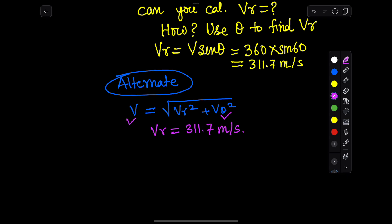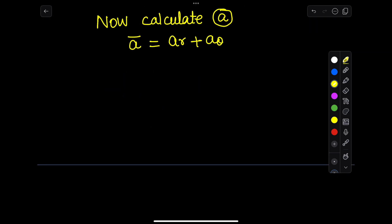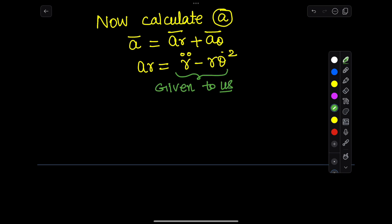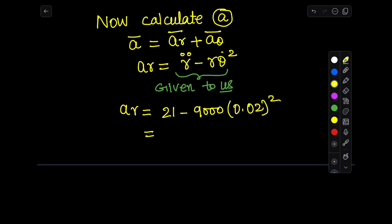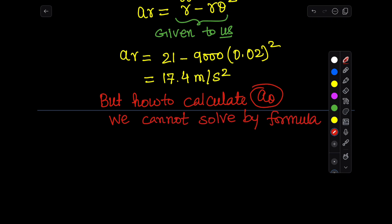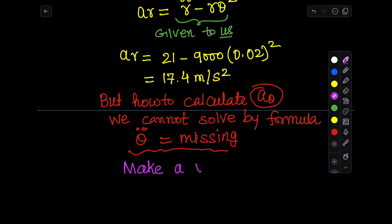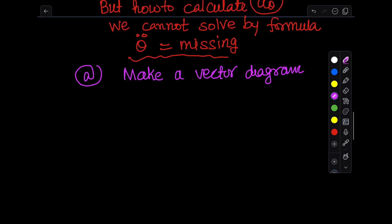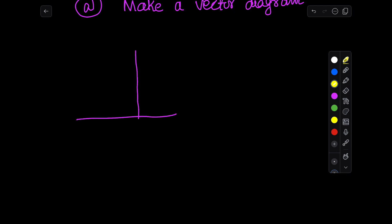Now let's find the acceleration and its magnitude. In the r-theta coordinate system, acceleration equals acceleration in the r-direction plus acceleration in the theta-direction. Since theta-double-prime (θ'') is unknown, we can only find the acceleration in the radial direction (ar) using the given information. For a-theta, we cannot use the formula directly because θ'' is missing.